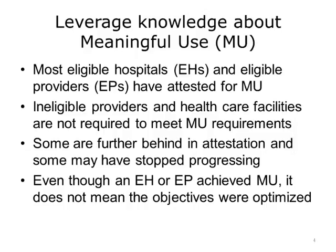Of those that are eligible, some are further behind in attesting to the requirements, and some may have stopped progressing. If an EH or EP achieved MU, it does not mean that the objectives were optimized — they may have been implemented in a tight time frame — and so additional work may be required for the objectives to be truly meaningful. Examples of additional work could be optimizing workflows, manual steps for sending summary of care documents, formatting, and adding data in a CCDA to be optimal for the receiver. Selected clinical quality measures were also chosen because they were easier to implement or from a limited subset from the EHR vendor.